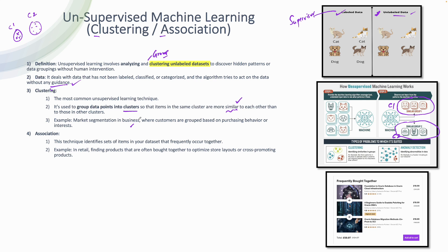The next important type is association. You've likely seen it on Udemy — this technique identifies sets of items in a dataset that frequently occur together. For example, when you go to purchase an Oracle Cloud foundation course, Udemy tells you these are three courses frequently bought together. It's detecting patterns from other users with similar interests who purchased these courses together, offering them as a bundle at a reduced price — that's a recommendation from machine learning.